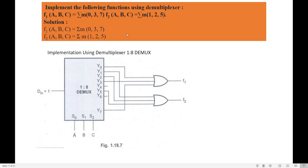In the exam, f1 and f2 may have different minterms — connect accordingly. If the function has four variables a, b, c, d, then use a 1-to-16 demultiplexor with a single input, outputs y0 through y15, and four select lines a, b, c, d. For three variables use a 1-to-8 demultiplexor. Thank you.